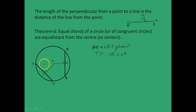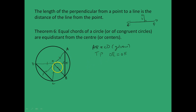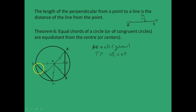We can start by drawing the radii OD, OC, OA, and OB. All of these are equal since they are simply radii. Recall that the perpendicular from the center to a chord bisects the chord, so DF equals FC and AE equals EB.